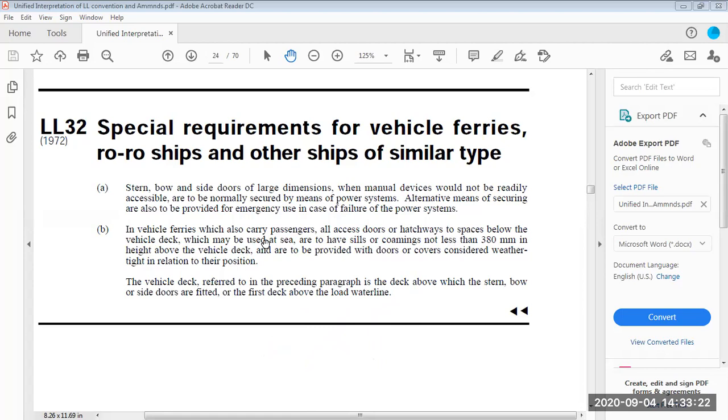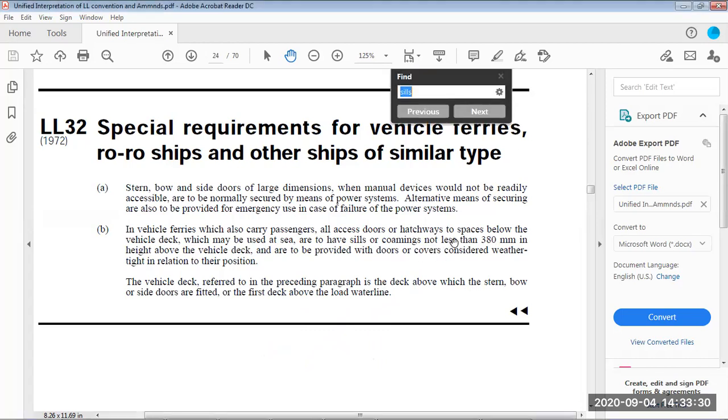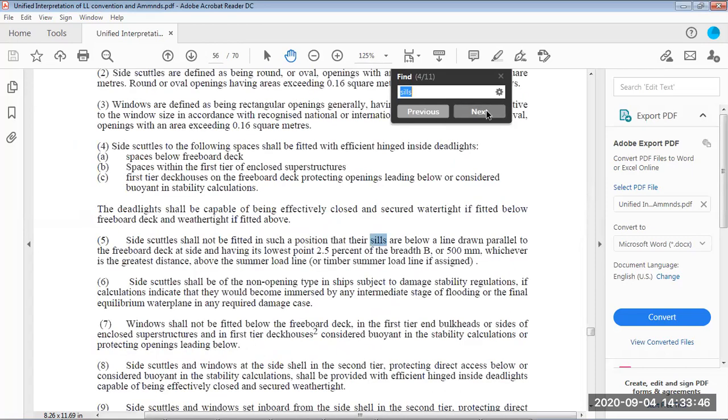The sill requirement for Roro type ships is 380 mm. From the vehicle deck, above 38 mm only can be your door access doors or hatchways to the spaces. Then if we see this combing height for sides curtains, it should be 2.5 percent of the breadth or 500 mm, whichever is greater above the summer load line.